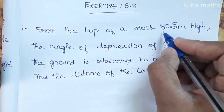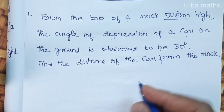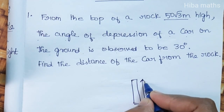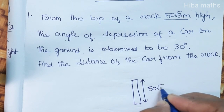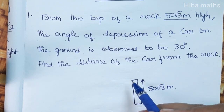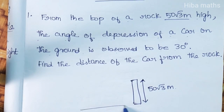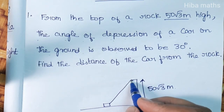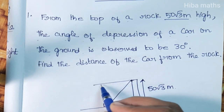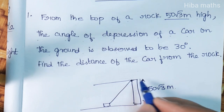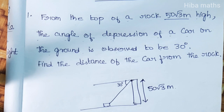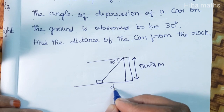From the top of a rock which is 50 root 3 meters in height, we can imagine the rock. The rock's full height is 50 root 3 meters. From the top of the rock, you can see a car on the ground. The angle of depression — the angle of depression is downward. From the top of the rock, you can see a line to the ground, so the angle of depression is 30 degrees. Find the distance of the car from the rock.